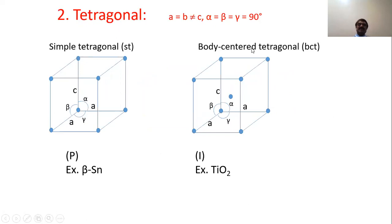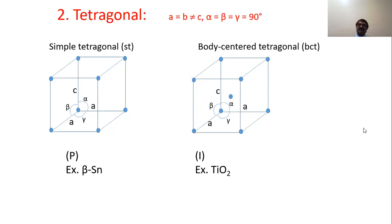The tetragonal system has A equal to B, but not equal to C, with angles alpha equal to beta equal to gamma equal to 90 degrees. Simple tetragonal (P) has beta-tin as an example. Body-centered tetragonal (I), where lattice points are at corners and at the center of the body, has titanium dioxide as an example.